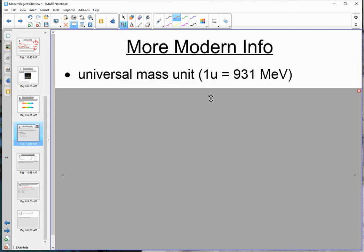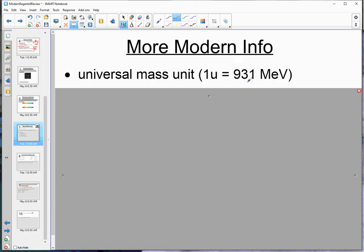All right, some more stuff. On the front page of the reference table, there's a way to convert mass into energy without using e equals mc squared. They've done it for you here. One universal mass unit would turn into 931 mega electron volts. That's 10 to the 6 electron volts. So you should know that this conversion lives on the front page of the reference table, and just do your factor label method. Make your brackets and make sure you're either multiplying or dividing as appropriate.